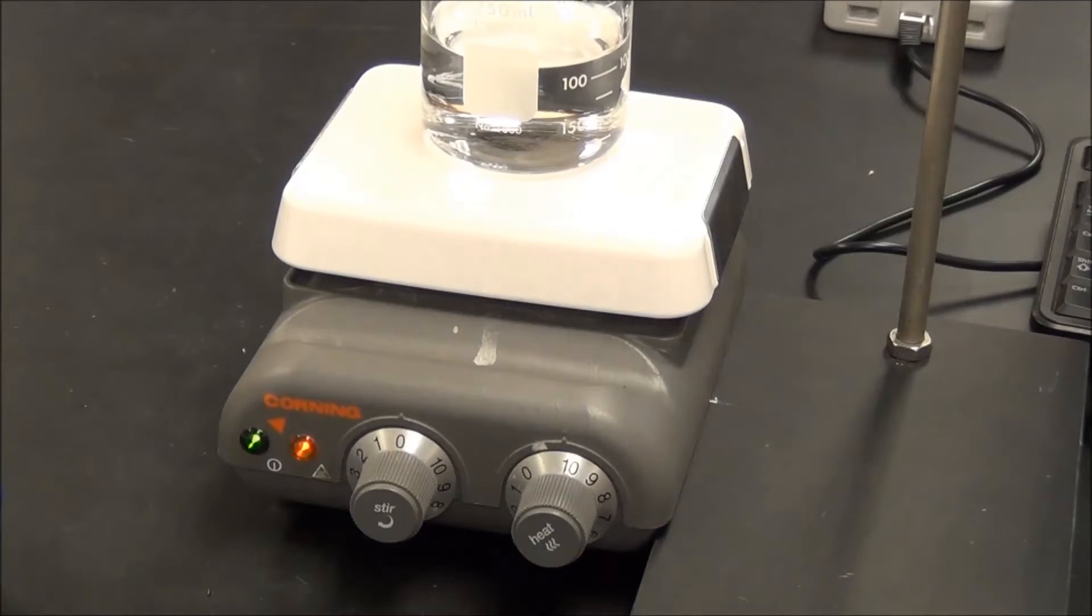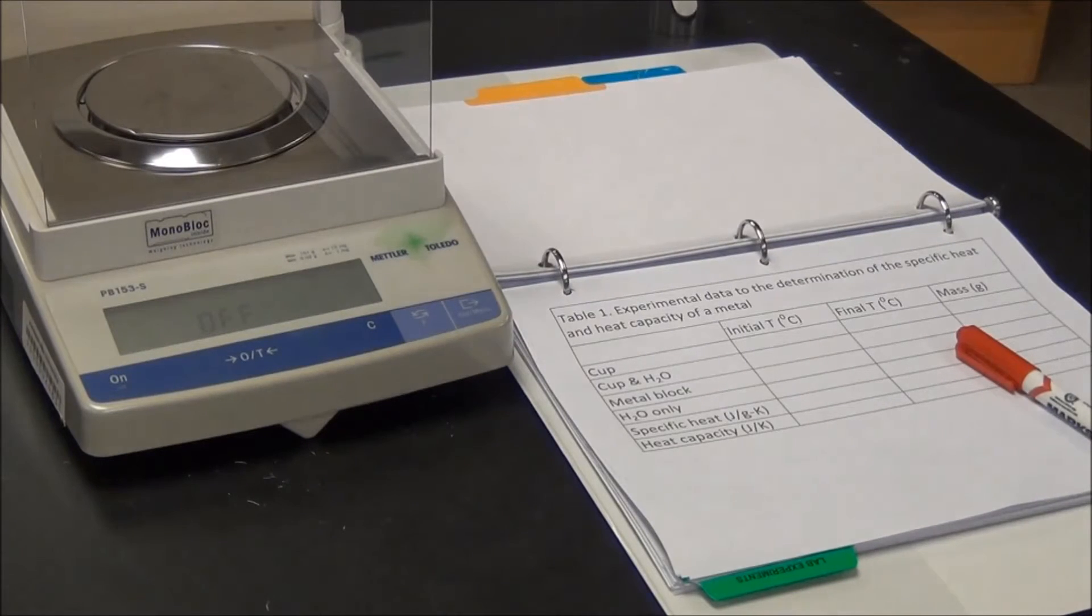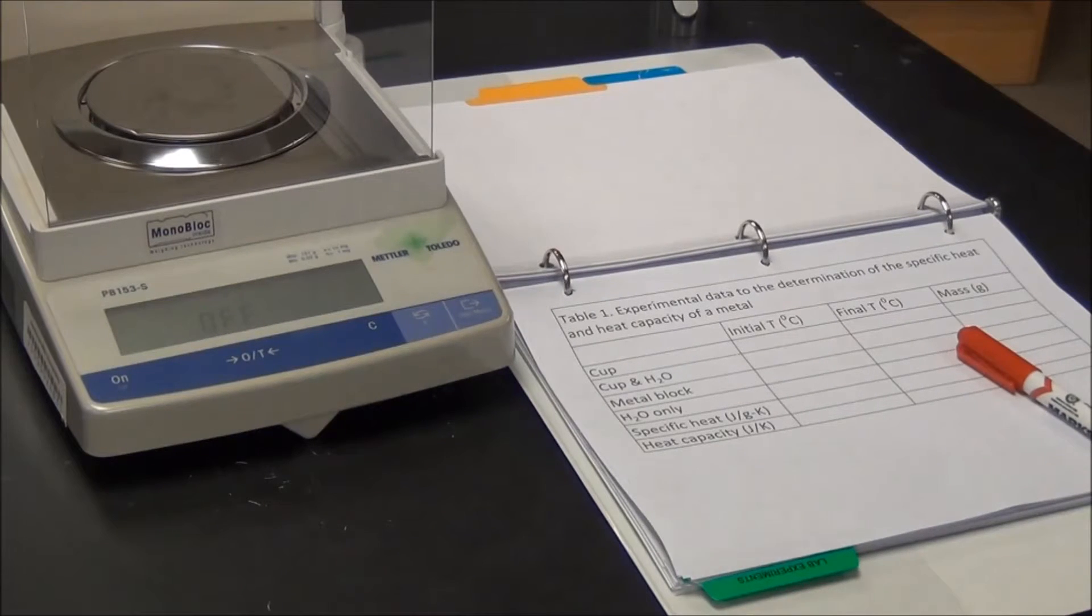Next, we need to measure a few masses. Apparently, if you want to get the mass of an object, you need an electronic balance. Here we find one.